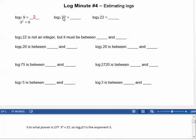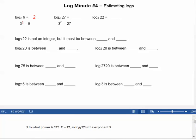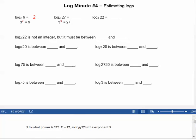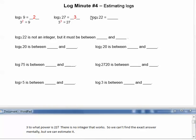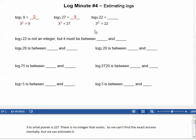3 to what power is 27? 3 cubed is 27, so log base 3 of 27 is the exponent 3. 3 to what power is 22? There's no integer that works there, so we can't find the exact answer mentally, but we can estimate it.